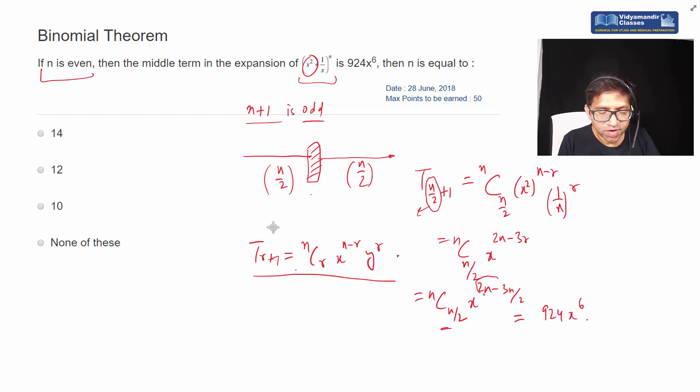Comparing, n by 2 is equal to 6. n by 2 is equal to 6, n equal to 12. And then we replace n with 12.